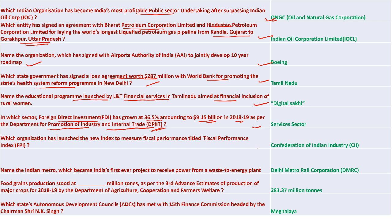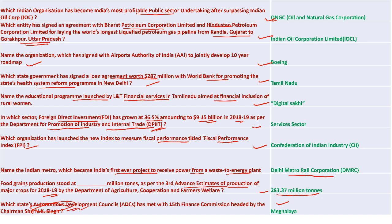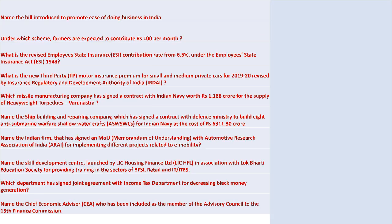FDI in the service sector grew 36.5% amounting to 9.15 billion in 2018-19 as per DPIIT. CII launched a new index to measure fiscal performance titled the Fiscal Performance Index. Delhi Metro Rail Corporation became the first project to receive power from a waste-to-energy plant. Food grain production was 283.37 million tons as per the third advance estimate for 2018-19. Meghalaya's Autonomous Development Council met the 15th Finance Commission headed by NK Singh.